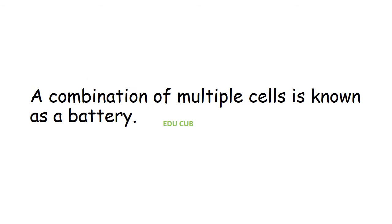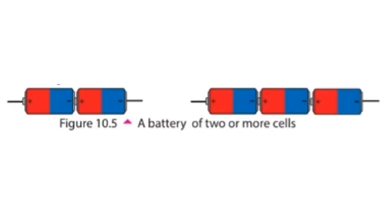Such a cell system is known as a series cell system. A combination of multiple cells is known as a battery. The two- and three-cell combinations shown in these figures are examples of batteries.